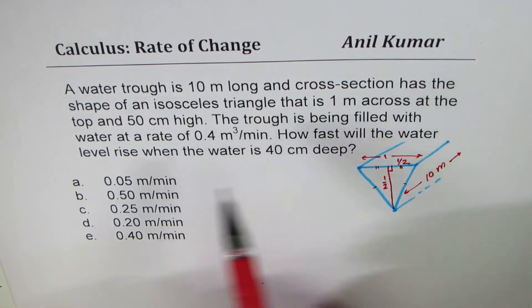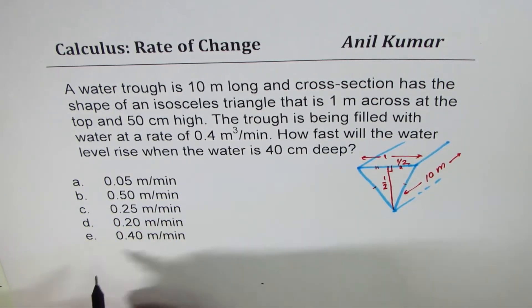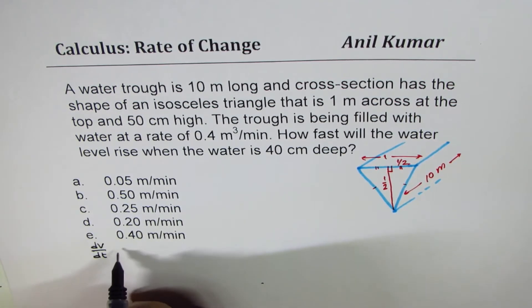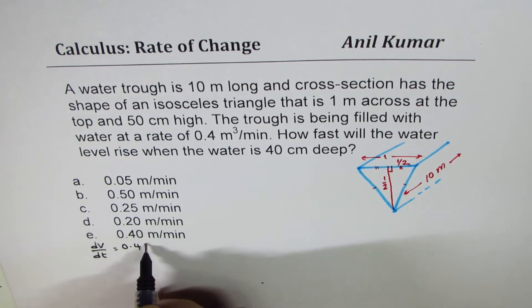The trough is being filled with water at the rate of 0.4. So we are given rate of change of volume with time is 0.4 meter cube per minute.